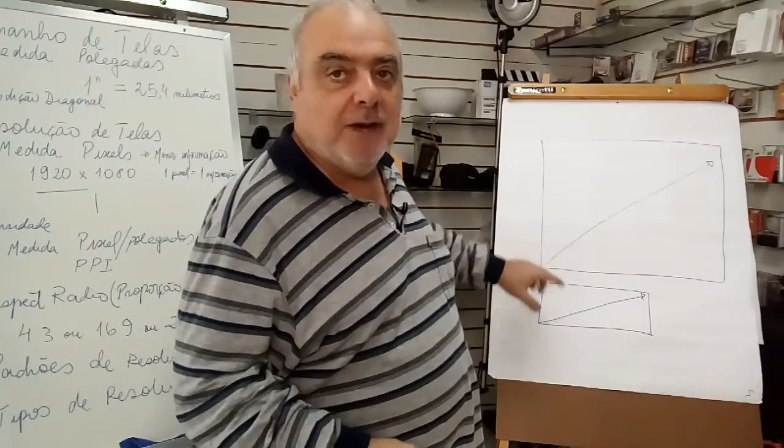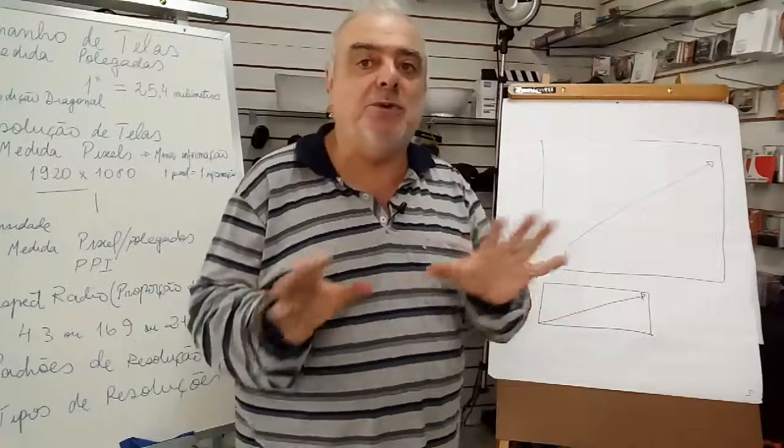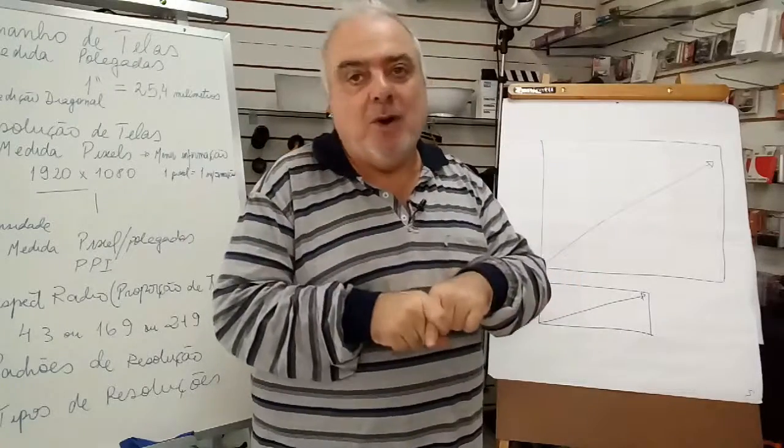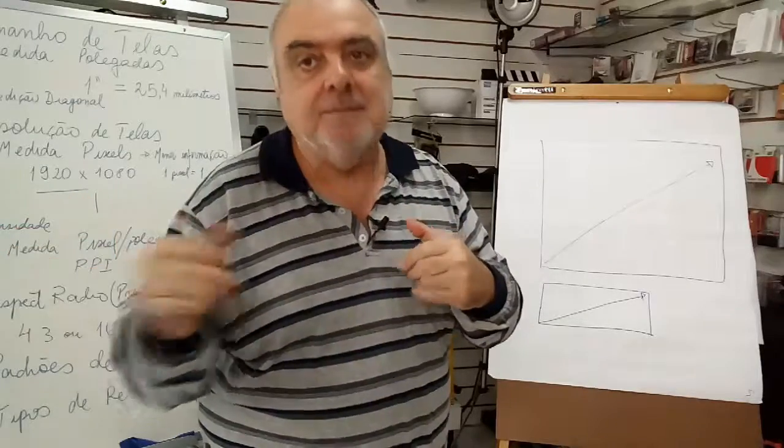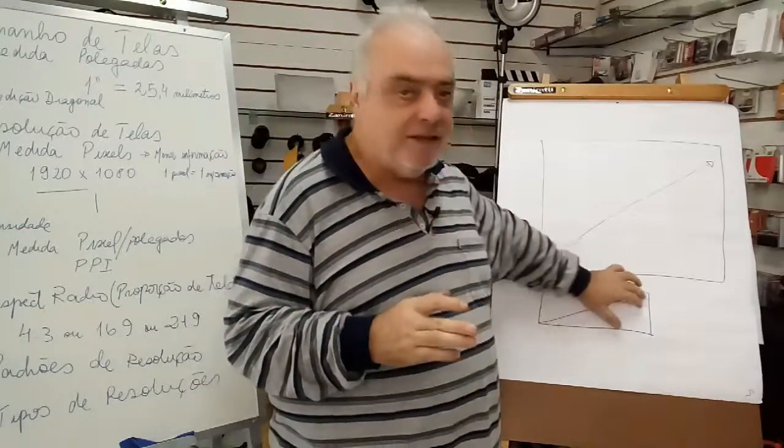Então, isso é super importante, porque quando você precisa diferenciar, às vezes uma televisão parece maior do que a outra. Por quê? Porque o entorno dela é maior, mas a tela pode ser igual à outra, que é menor.